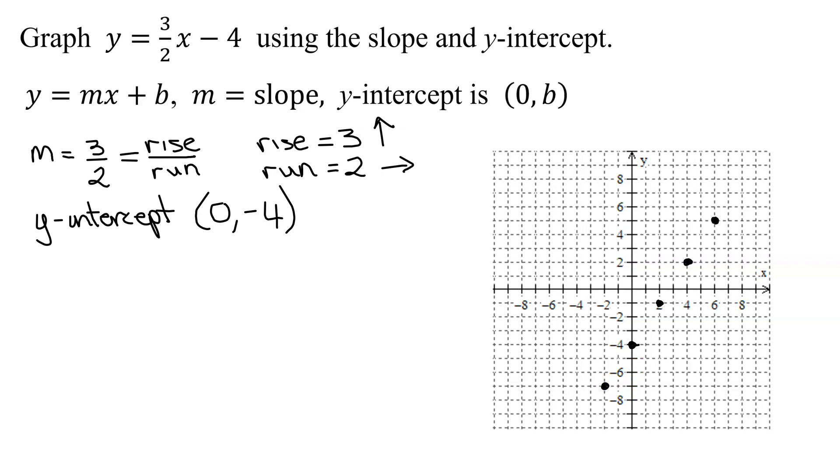So that forms a nice straight line. I'm now going to try and draw my straight line. So here's my straight line, if I can get it going through the points. And don't forget, put arrows on both ends. So now I have graphed the line y equals 3 halves x minus 4 using the slope and the y-intercept.